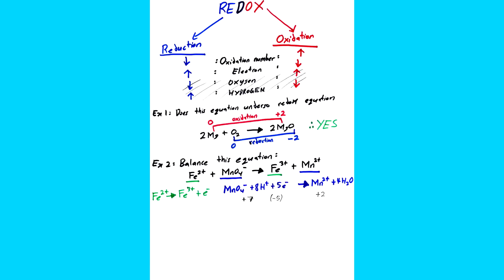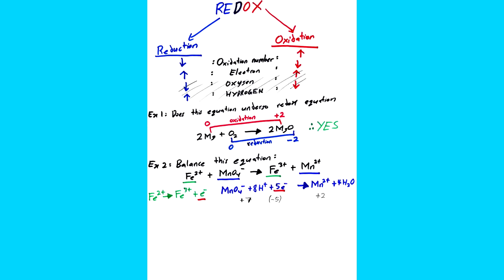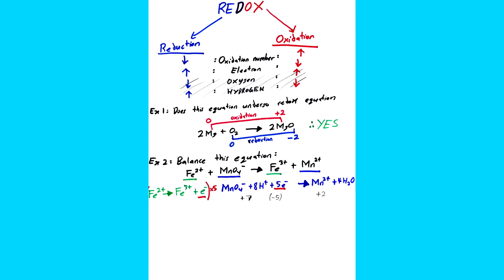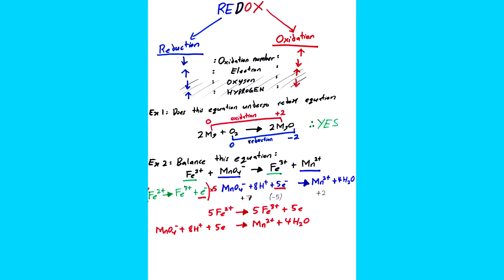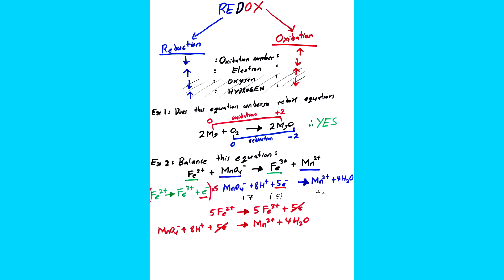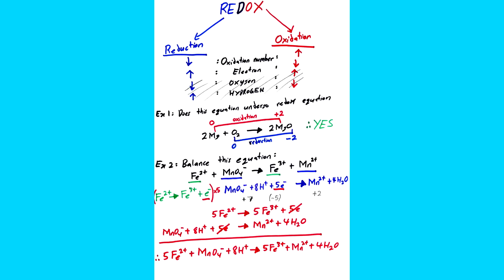And just like that, half equation dah balance. Tapi untuk full equation, kita kena compare number of electron dekat kedua equation ni. Warna hijau hanya ada 1 electron dan warna unguh ada 5 electron. So kita kena kali half equation hijau ni dengan 5. And then tulis 2 equation ni atas each other. And then cut 5 electron tu. And then tulis balik semua elemen-elemen tu and settle. Macam tu je kita dah dapat full equation dia.